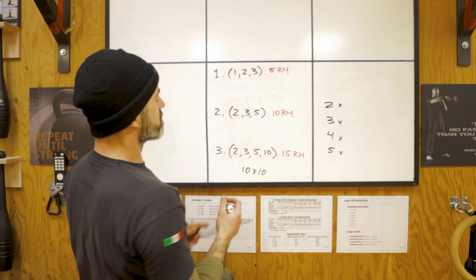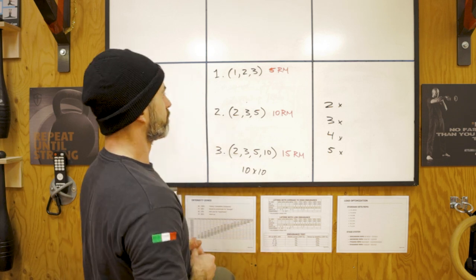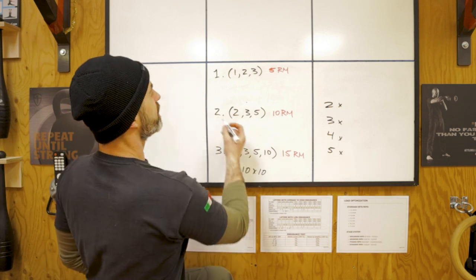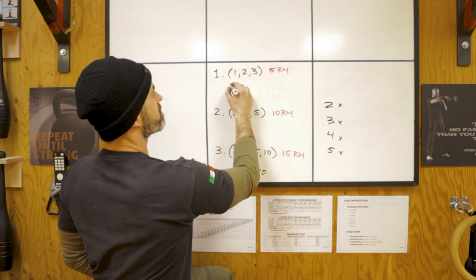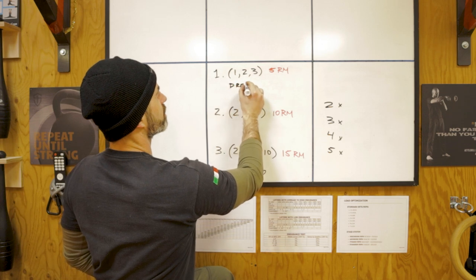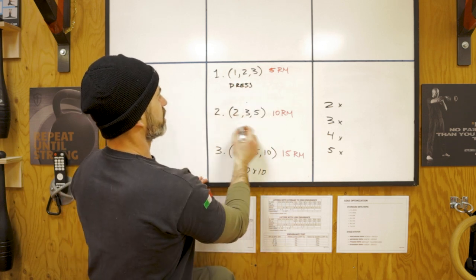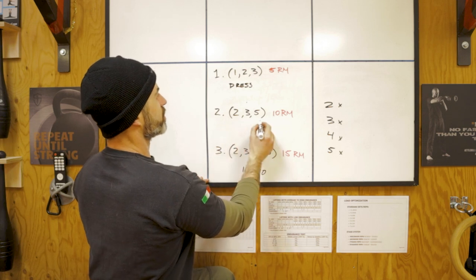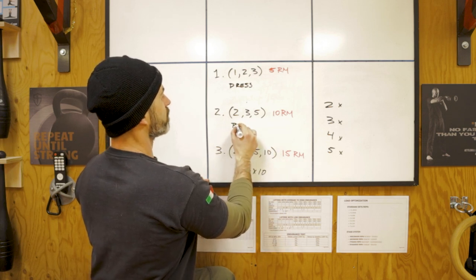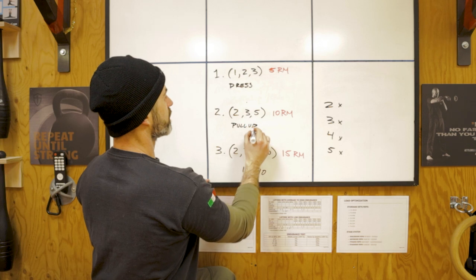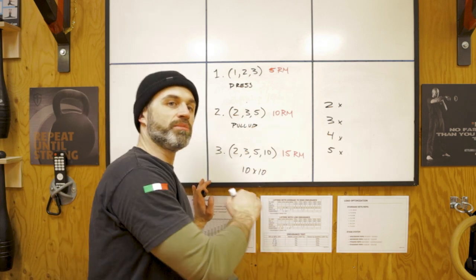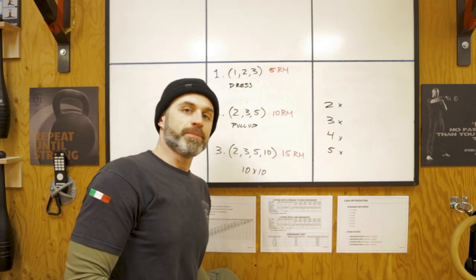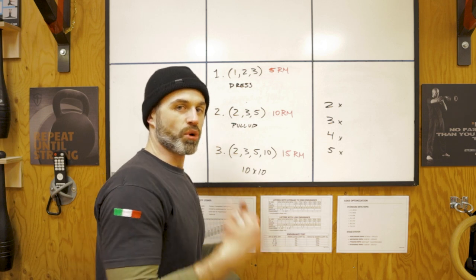So the first exercise for session one would be a press. In the same session, the second exercise would be medium, you would do a pull like a pull-up. And the third exercise would be lighter, you could do a lower body, for example a deadlift or a front squat.